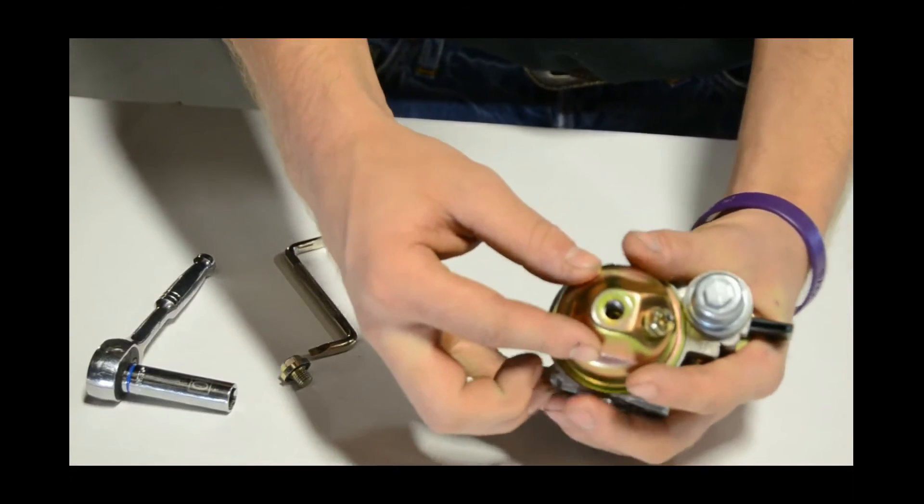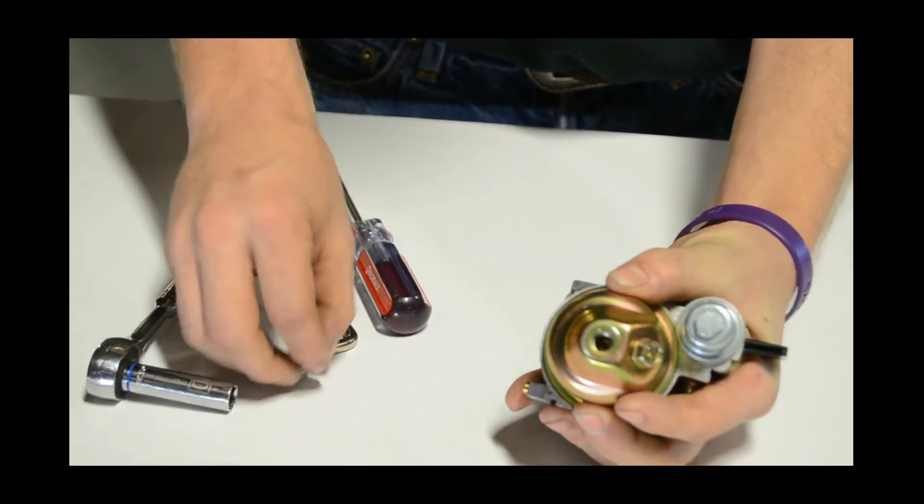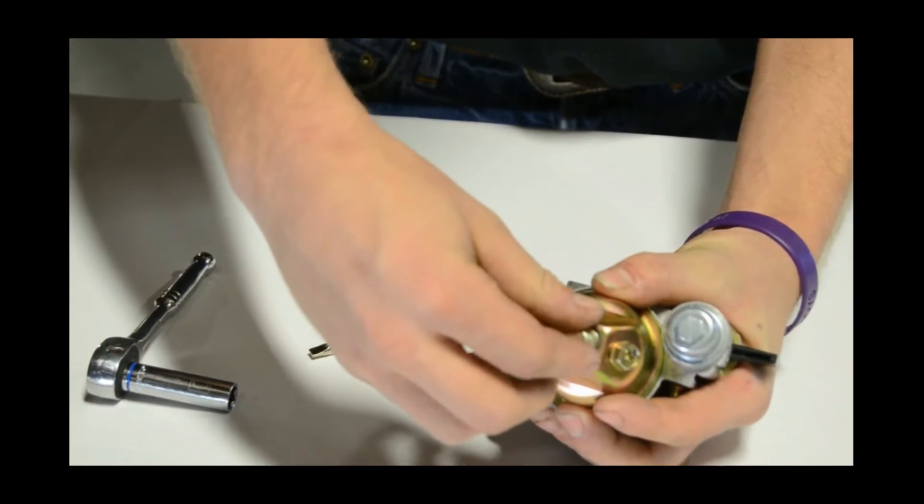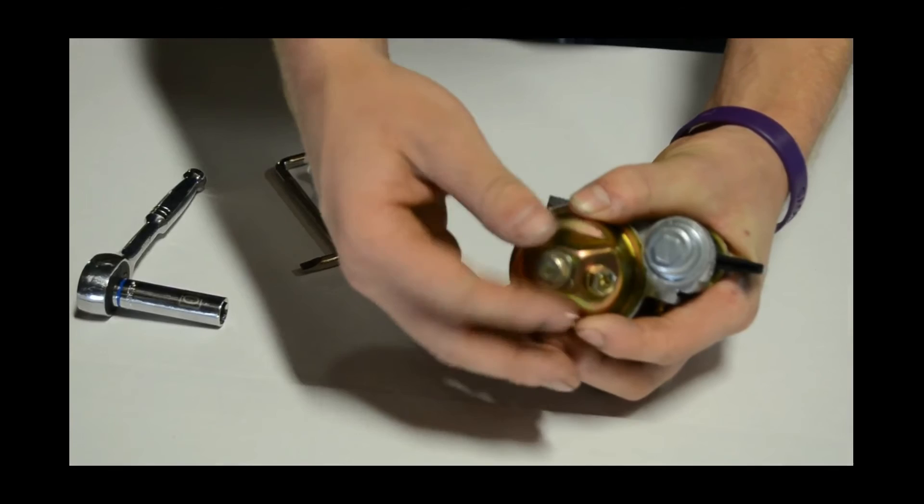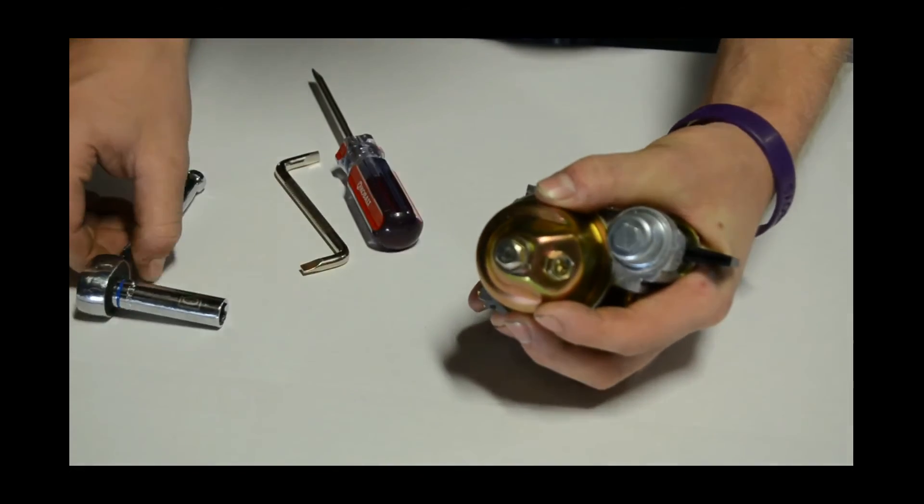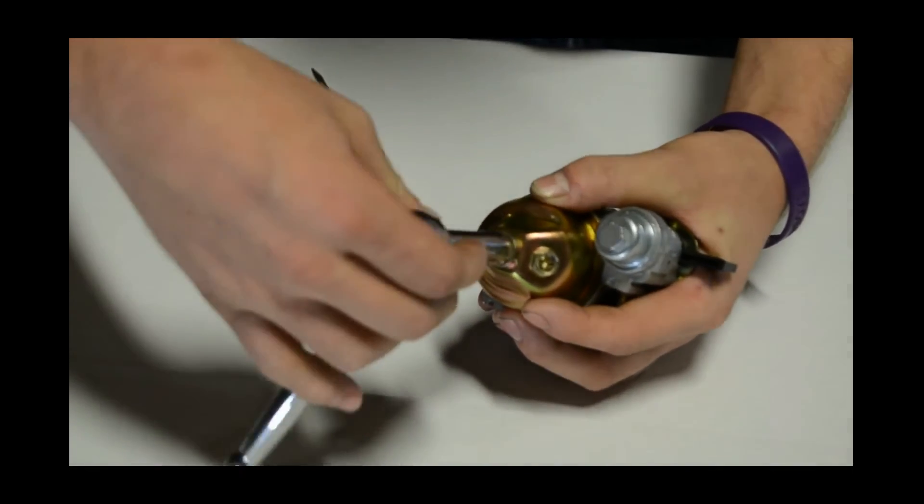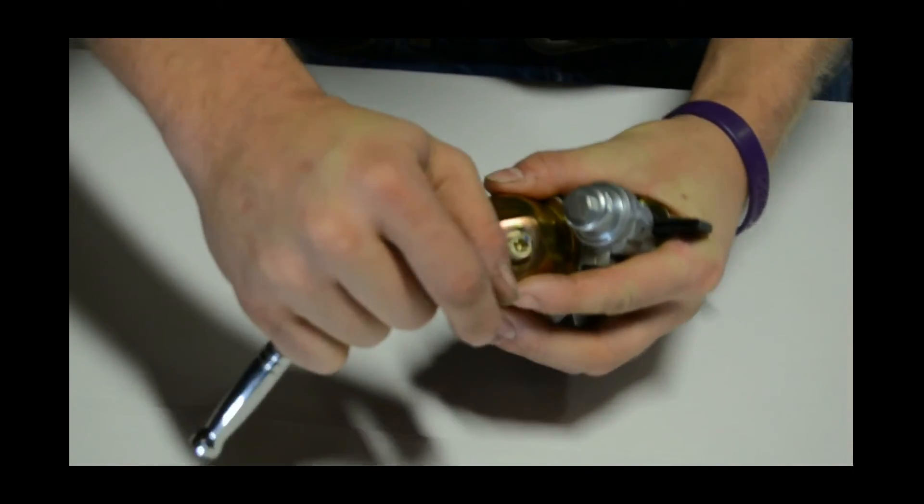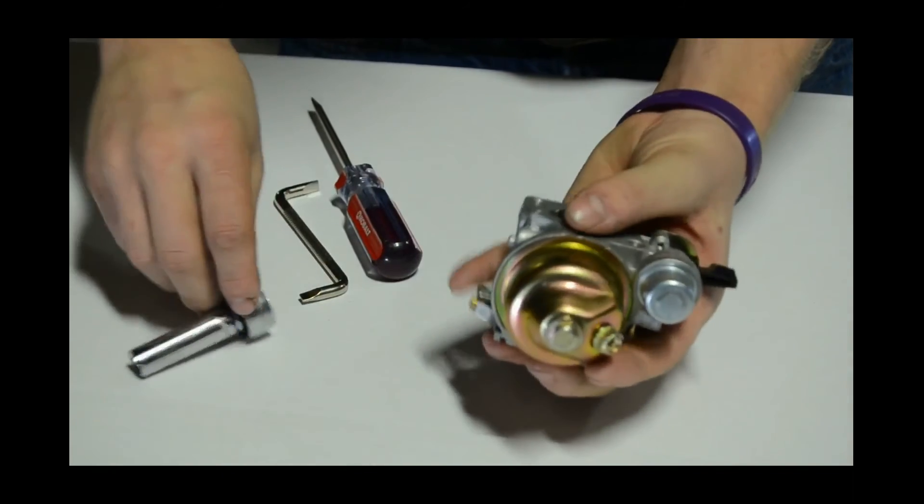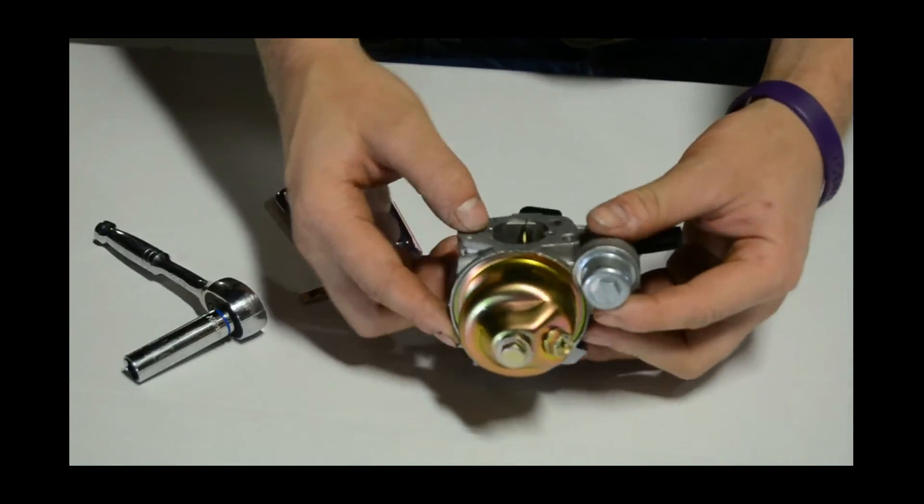Now, you're ready to reinstall the float bowl. Just like you removed it, you reinstall it the same way. You're putting your float bowl bolt back in there. And be sure that you're not over-tightening this either. It will crush the bottom of the float bowl, which can lead to fuel leakage also.